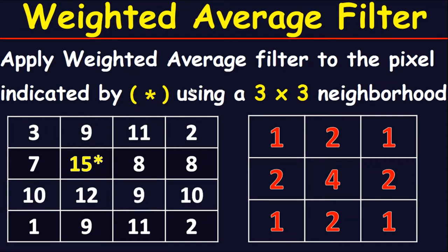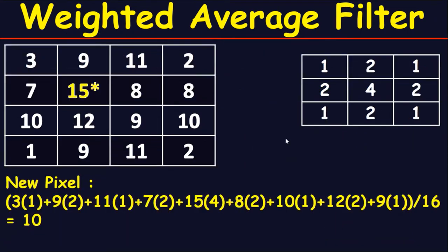Apply a weighted average filter to the indicated pixel using a three by three neighborhood. Take the three by three matrix and place it on the original image, making sure to align the center of the matrix — which is four — with the required pixel, which is 15.